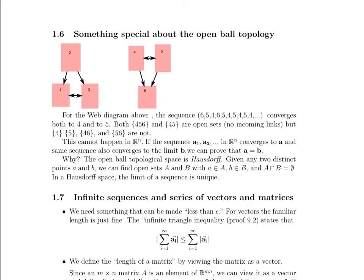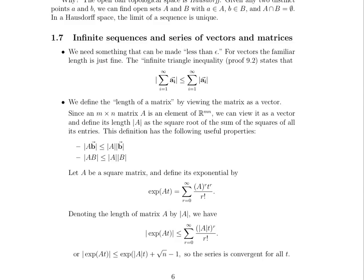Moving on a little bit, let's talk about infinite sequences and series of vectors and matrices. So this is really combining everything we did in Module 2 with some of the concepts that we did in Module 1. Now, first up, we need something that can be made less than epsilon. And for vectors, the familiar idea and notion of length is perfectly fine. And the infinite triangle inequality, which is going to be your proof 9.2, actually states that the length of an infinite series of vectors is less than or equal to the sum of their lengths. And again, we'll be going over that in class.